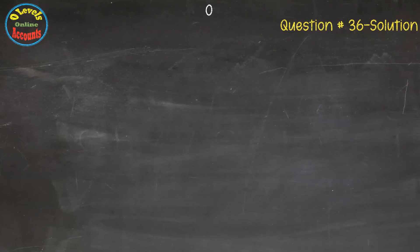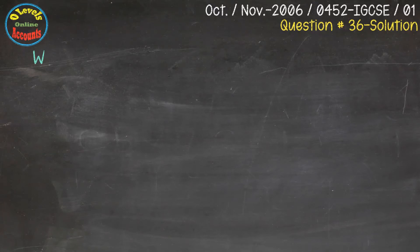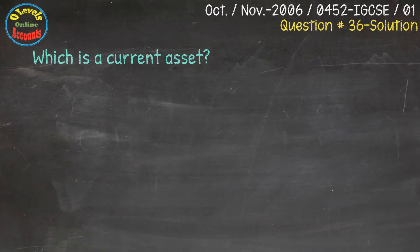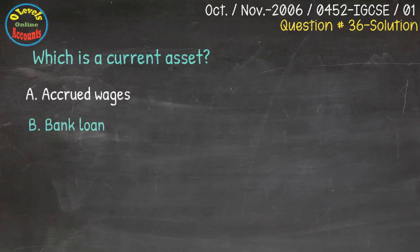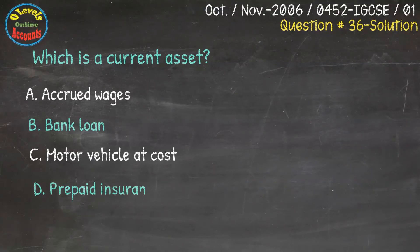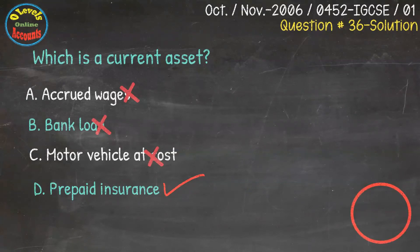We have question number 36 from October/November 2006, 0452 IGCSE Paper 1. In this question, which is the current asset? Options are: A. Accrued wages, B. Bank loan, C. Motor vehicle at cost, D. Prepaid insurance. Prepaid insurance is the correct answer, available with the D option in the question.